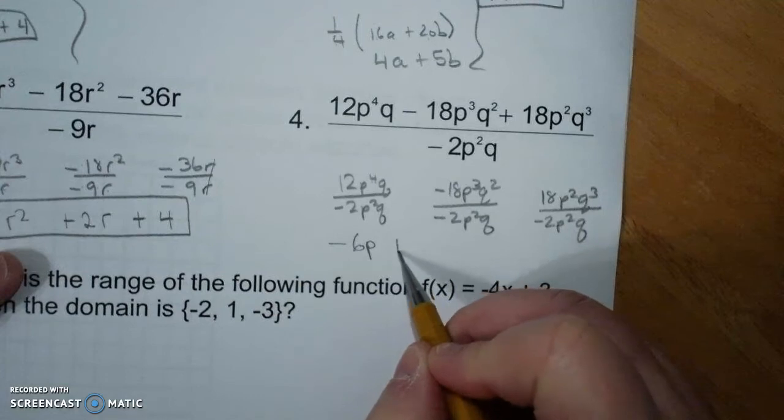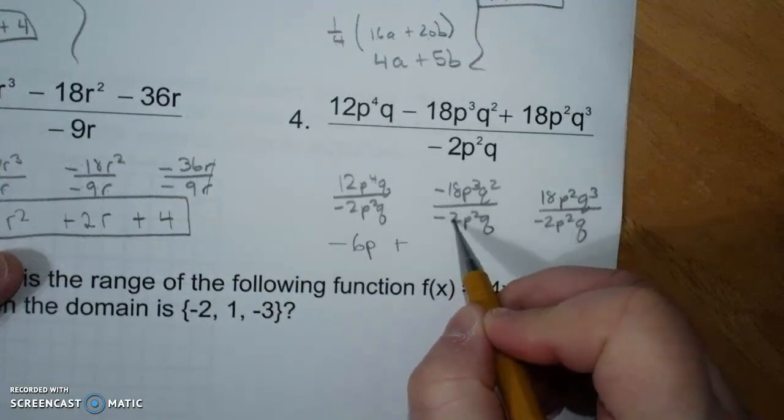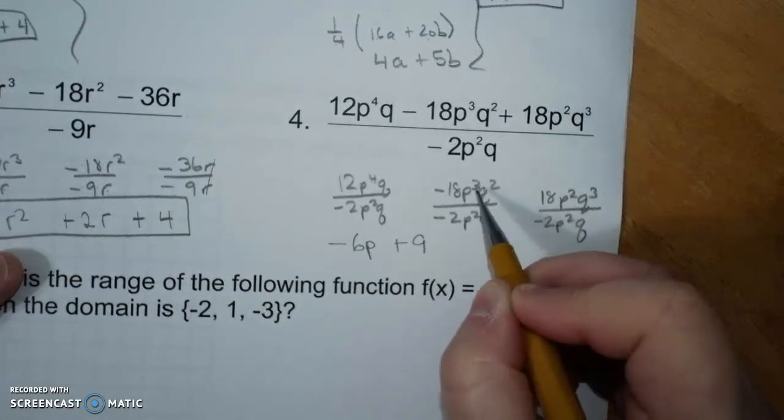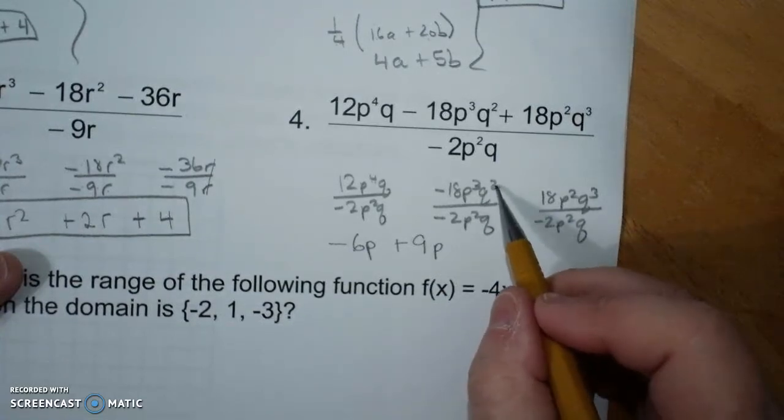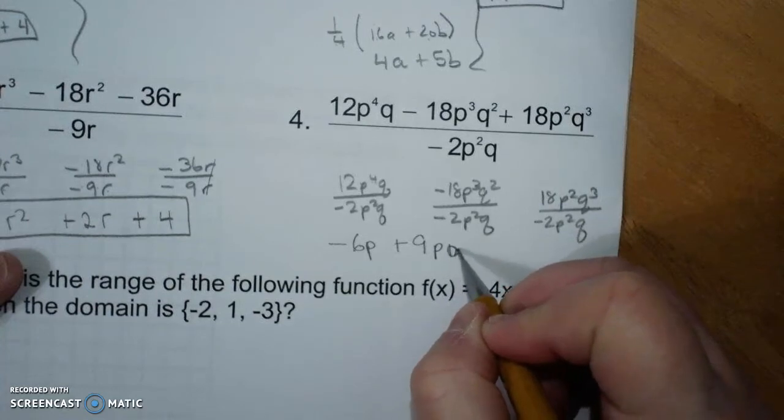Negative divided by a negative is a positive. 18 divided by 2 is 9. Three up there, two down there, 1 stays. Two up there, one down there, 1 stays.